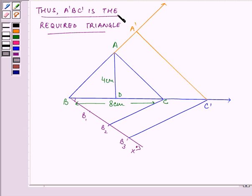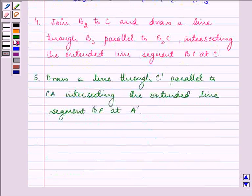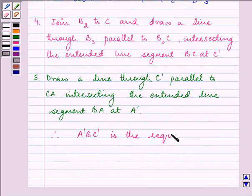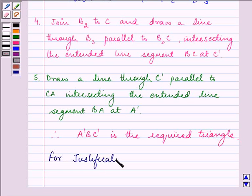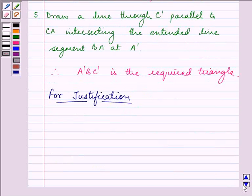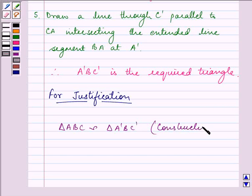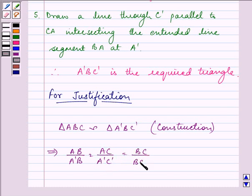Right, now for justification, we know that triangle ABC is similar to triangle A dash B C dash that we have constructed.